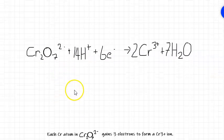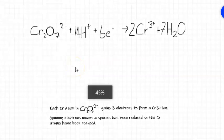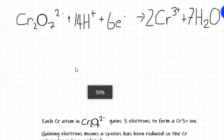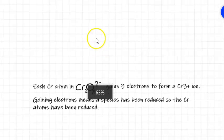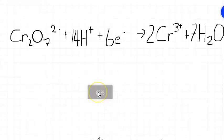Here's an example of how we would write that. We would say that each chromium atom in dichromate ion gains three electrons to form a chromium three plus ion. Gaining electrons means the species has been reduced, so the chromium atoms, or you could say the dichromate ion has been reduced. That's one way of doing it, and that's fine just doing it like that.